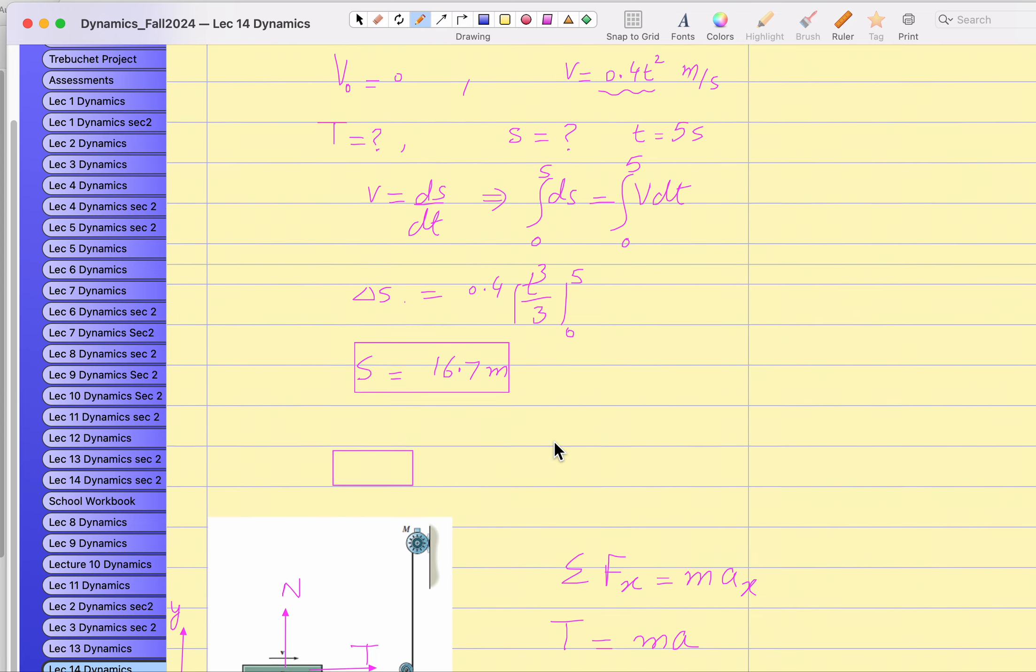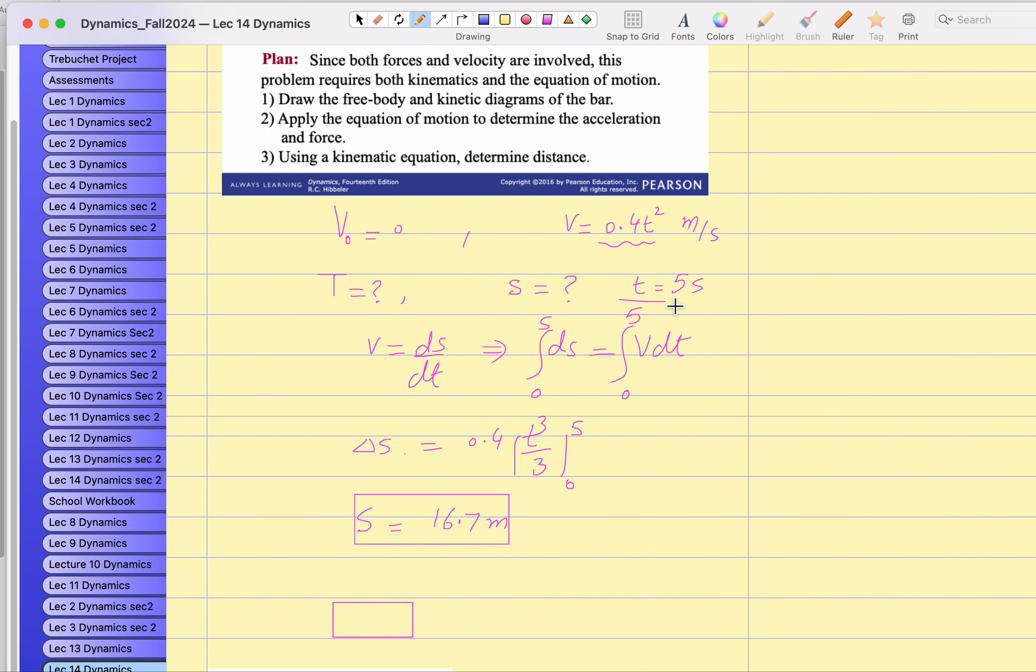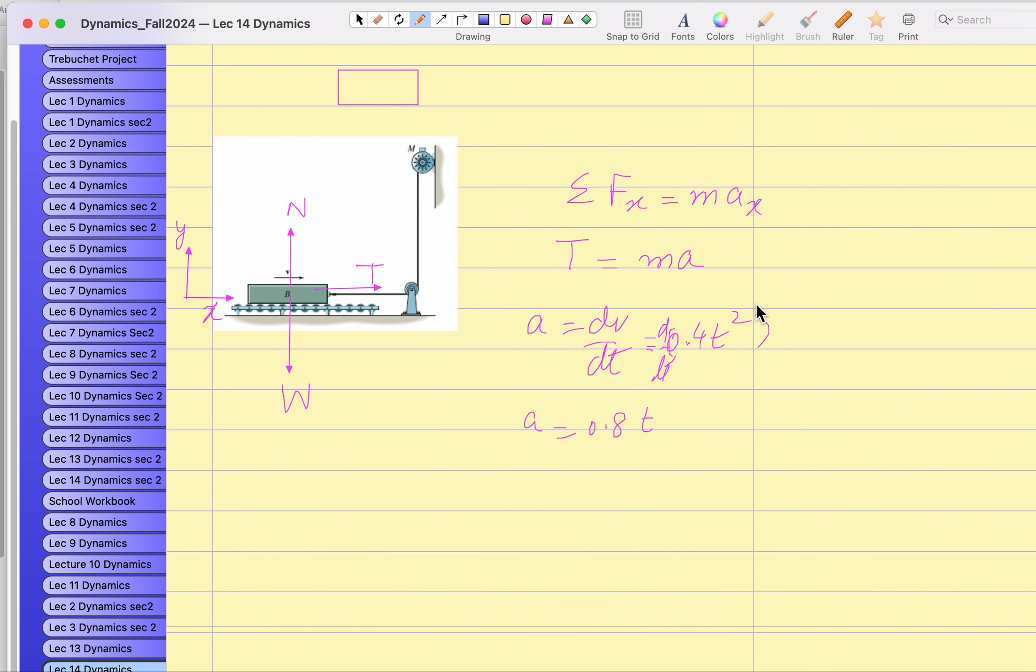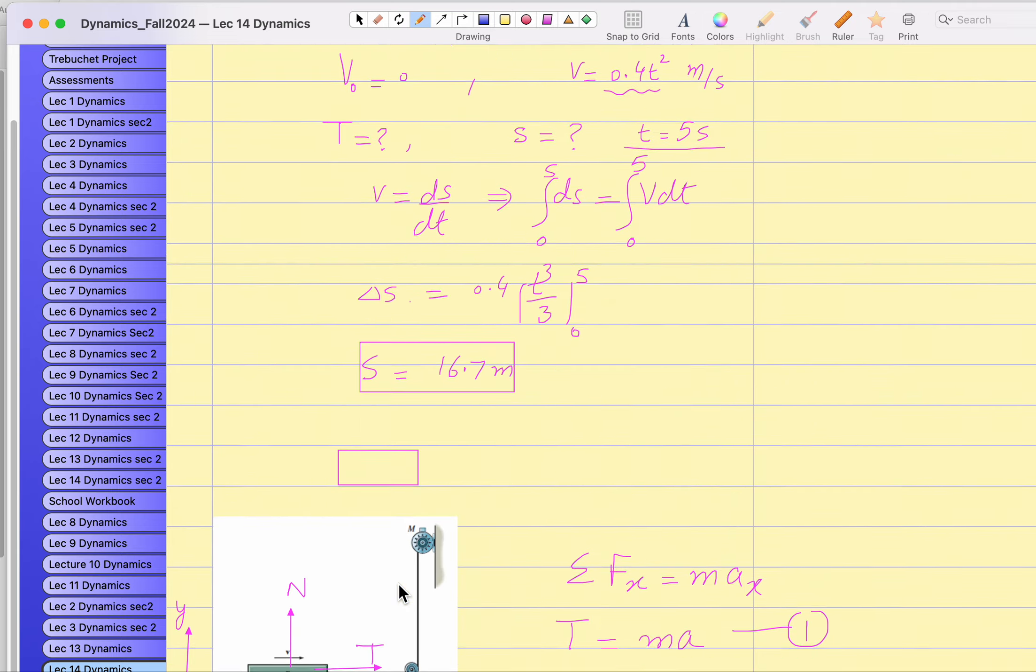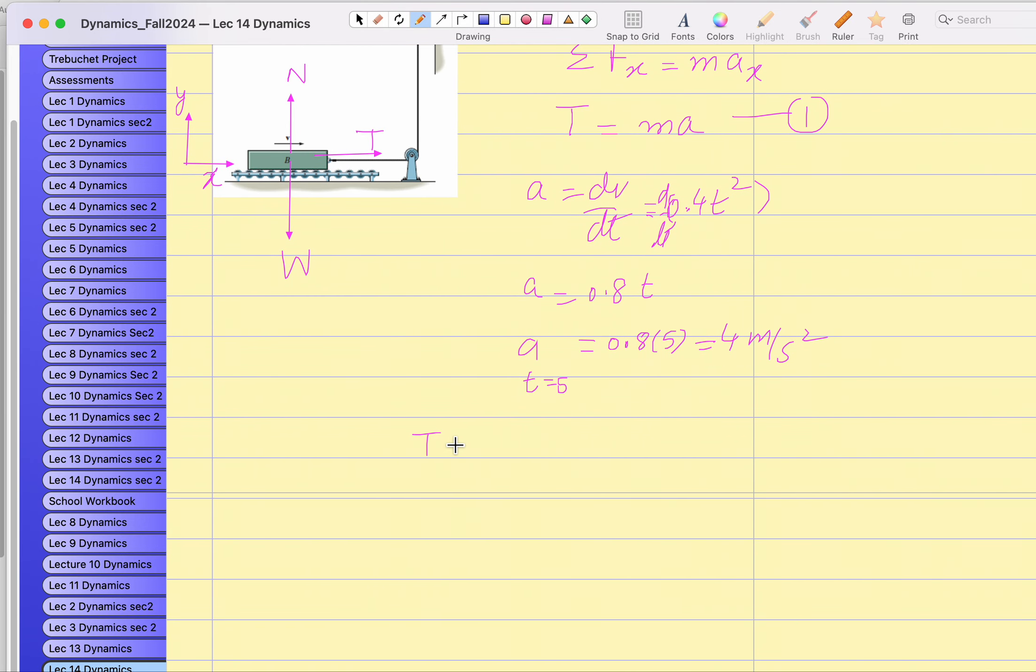Let's plug in at five seconds, since this is asking you to take the picture at five seconds. If I take the snapshot at five seconds, a at t equals five seconds would be 0.8 times five, which is four meters per second squared. Now plug it in. The mass of this slab is 300 kilograms, so tension equals 300 kilograms times four, which is 1200 newtons. So this is your answer.